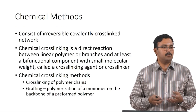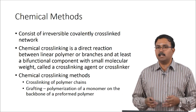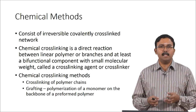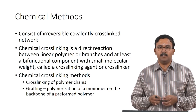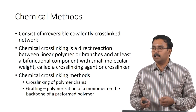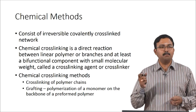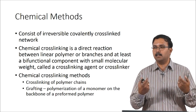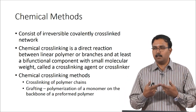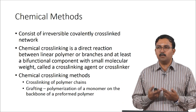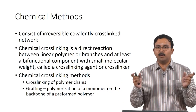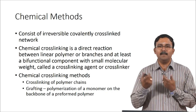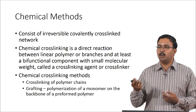Chemical methods consist of forming irreversible covalent crosslinks. Chemical crosslinking is basically a direct reaction between the polymer or its branches with a bifunctional component of small molecular weight — the crosslinking agent or crosslinker. One side of the functional group interacts with one polymer chain and the other functional group interacts with the other polymer chain, thereby forming the crosslinks. Glutaraldehyde is one such molecule very commonly used — it has two aldehyde groups that can easily react with amines and other molecules to form crosslinks.